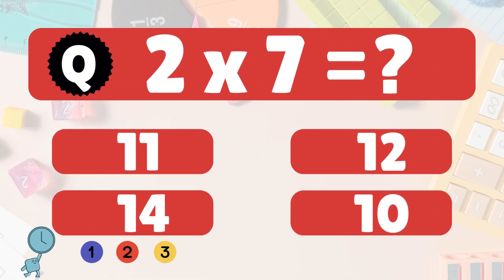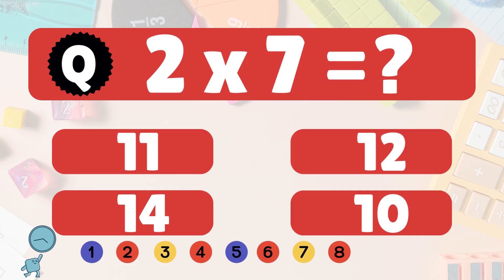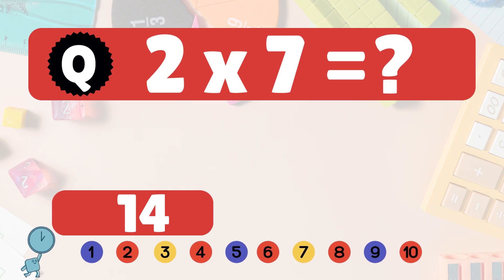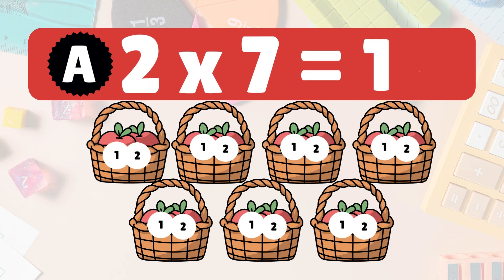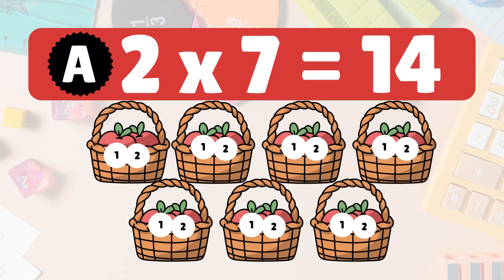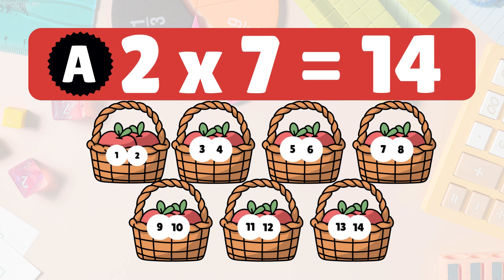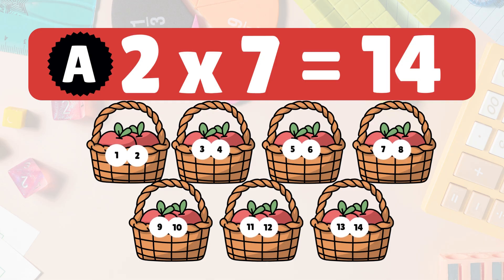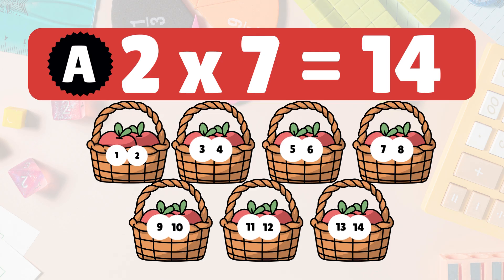Next, 2 times 7 is what? 2 times 7 is 14. Here we have 7 groups of 2 apples each. Let's count them all: 1, 2, 3, 4, 5, 6, 7, 8, 9, 10, 11, 12, 13, 14. So 2 times 7 is 14 apples.